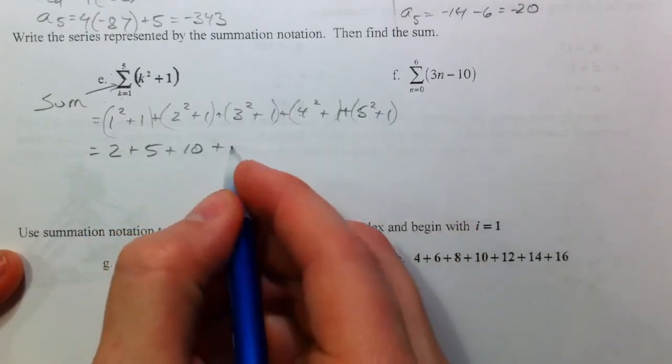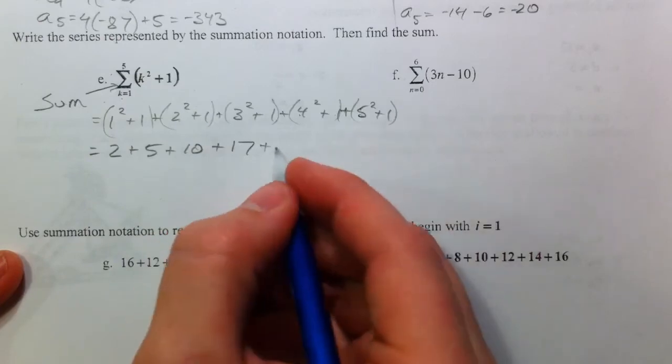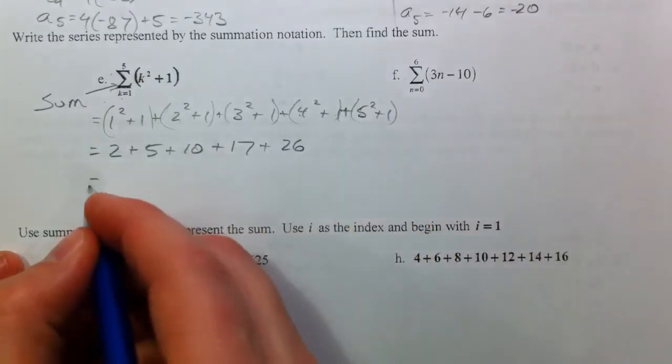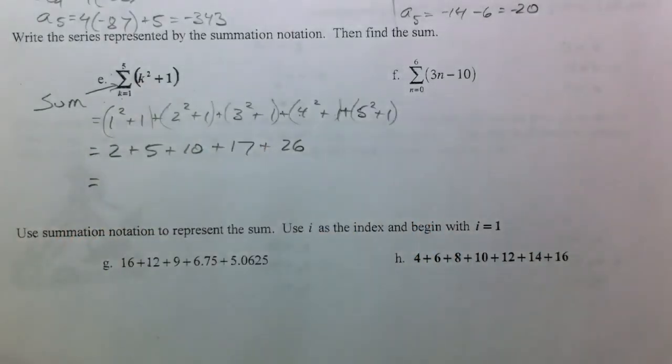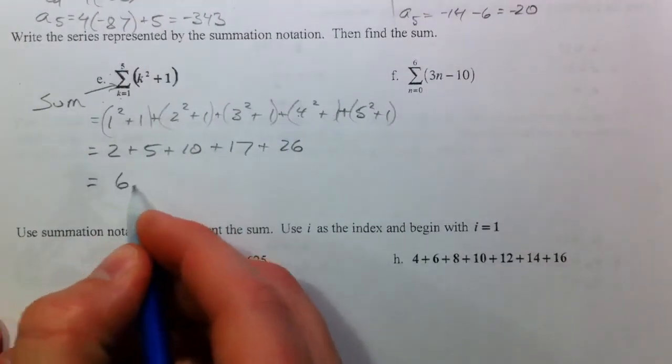16 plus 1 is 17, 5 squared, 25, 26. So, 2, 5, 10, 17, 26 make a total of 60.